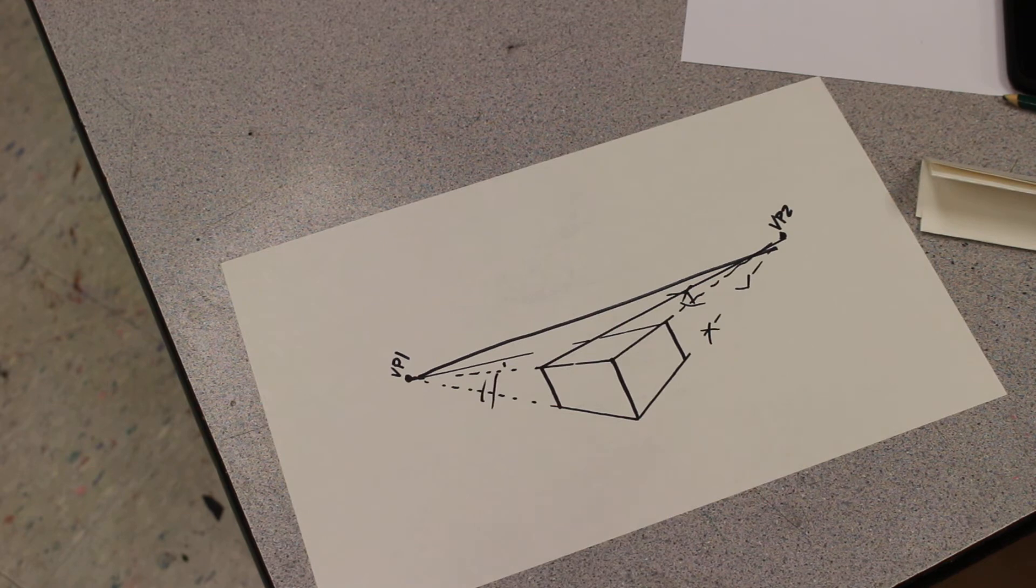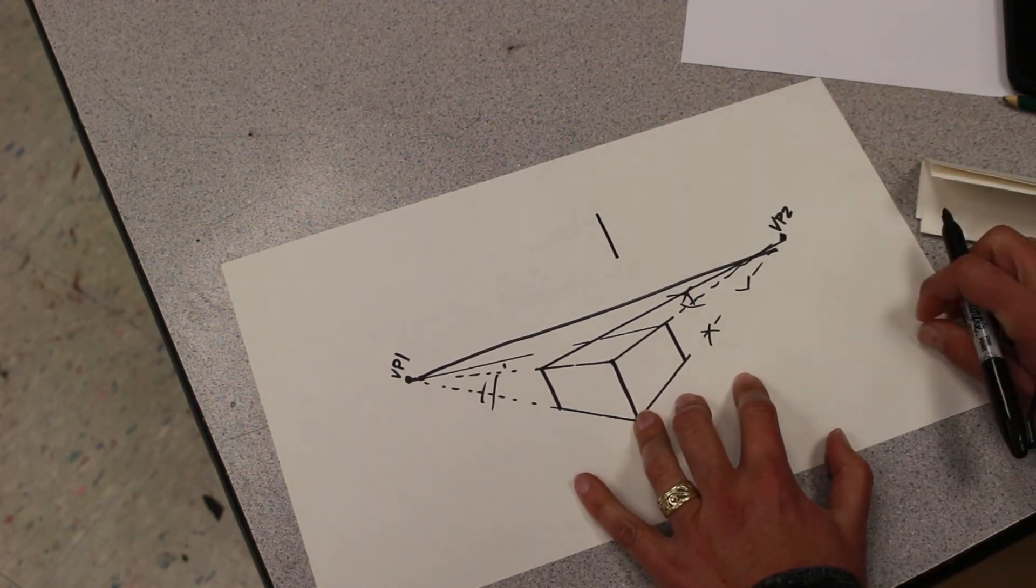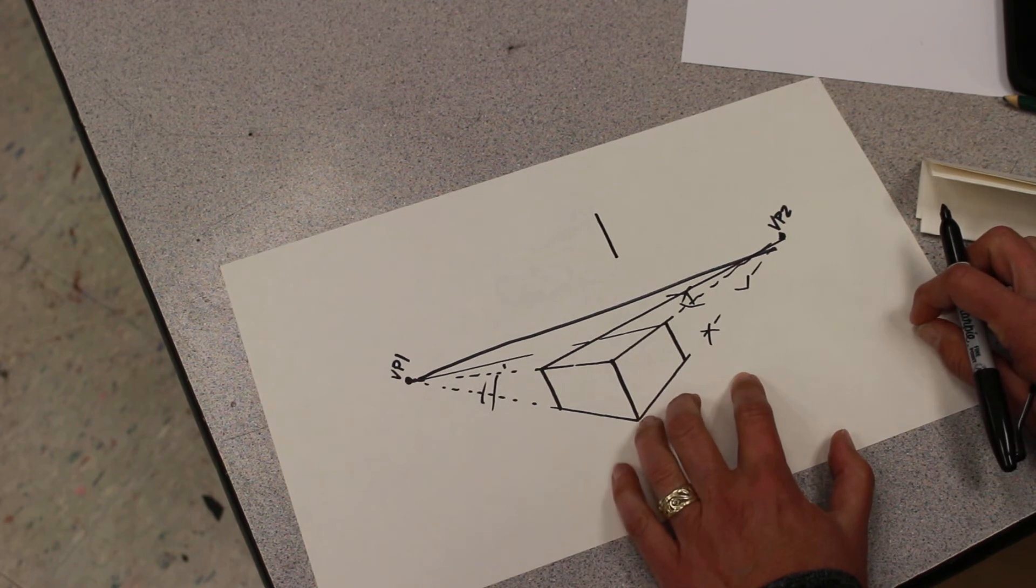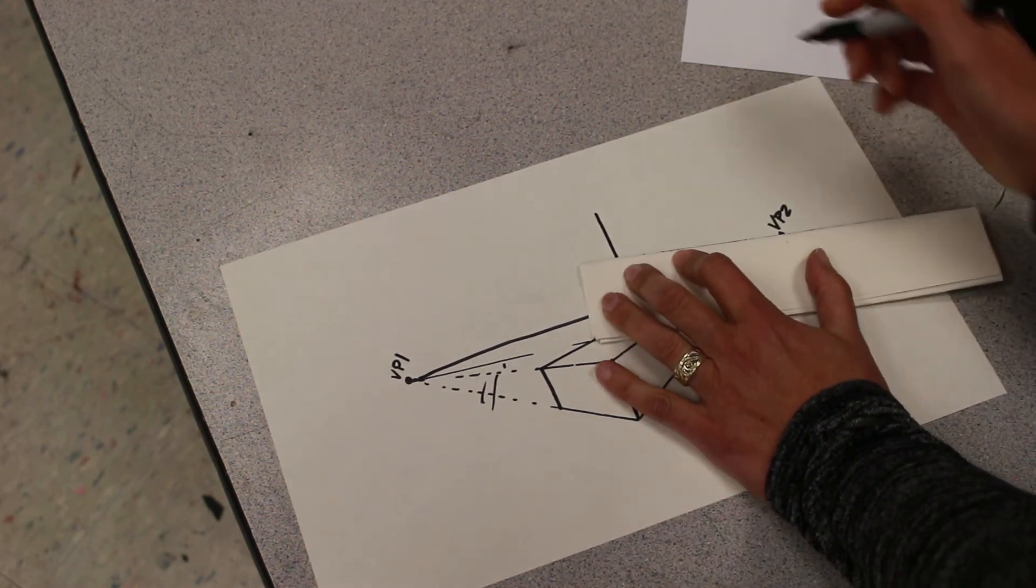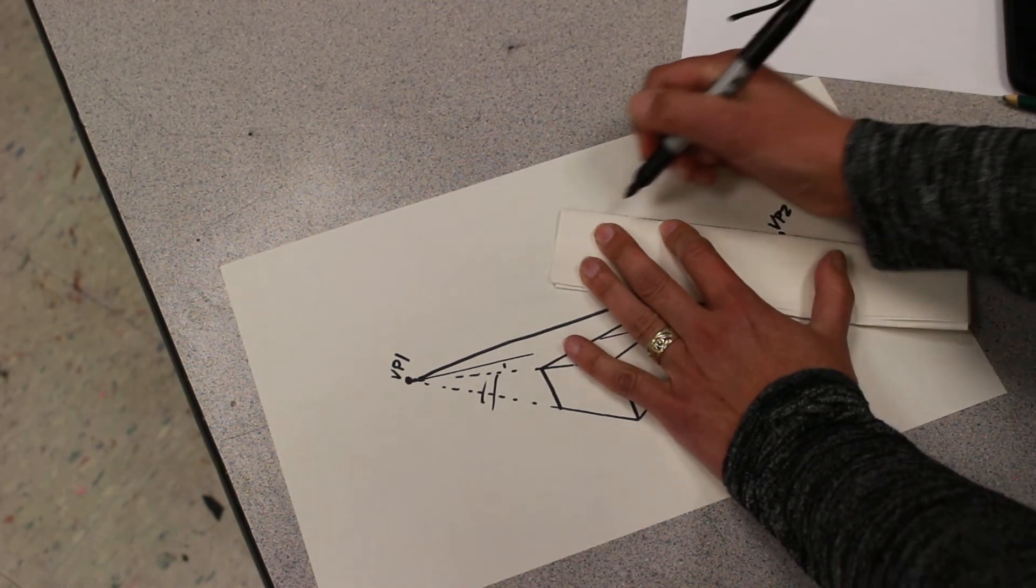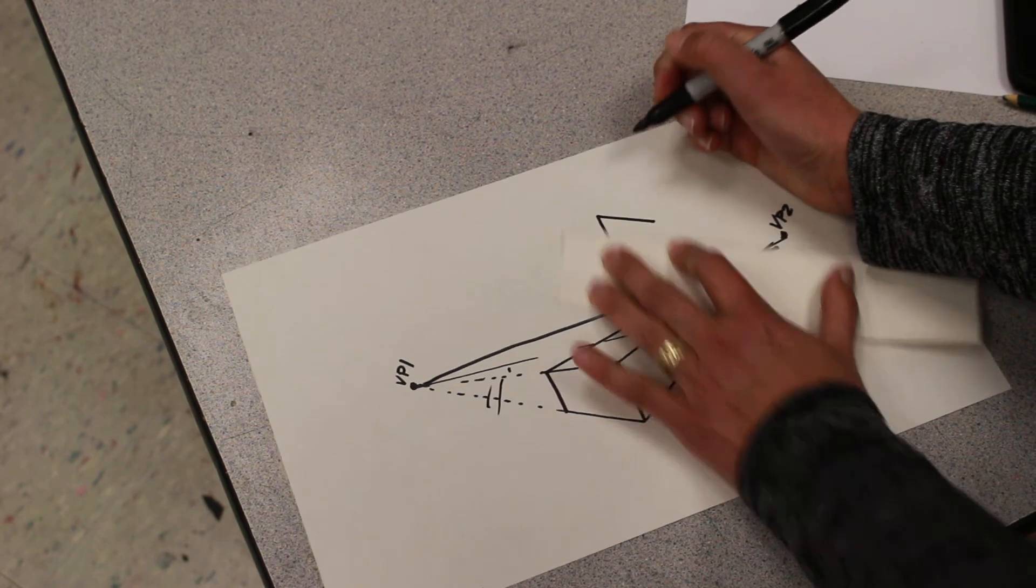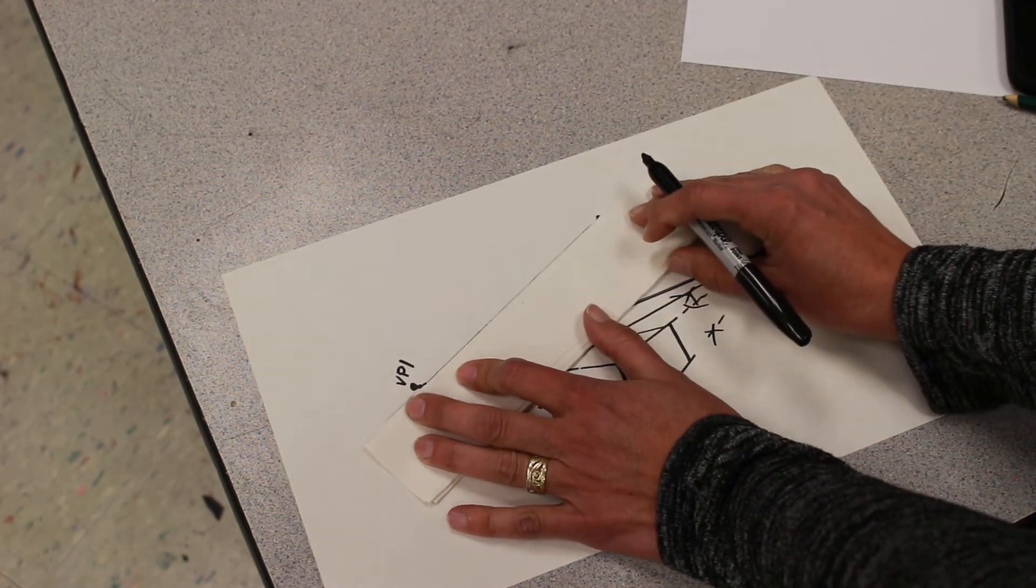Now this would be the same procedure if you are doing it from above the horizon line. You'll start with your straight line. You'll make sure that the top and the bottom of the line go to both vanishing point number one and vanishing point number two.